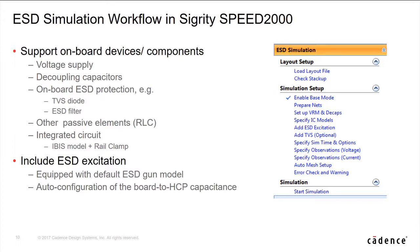Now let's talk about how ESD simulation is done in Speed2000. In the 2017 release, Speed2000 introduced a new workflow called ESD simulation. The new workflow guides users to set up and run ESD simulation, then examine the results. It has a built-in default ESD gun model and makes automatic configurations for ESD gun return current paths. It also allows users to add onboard ESD protection devices — transient voltage suppression or TVS diodes — to minimize ESD impact.